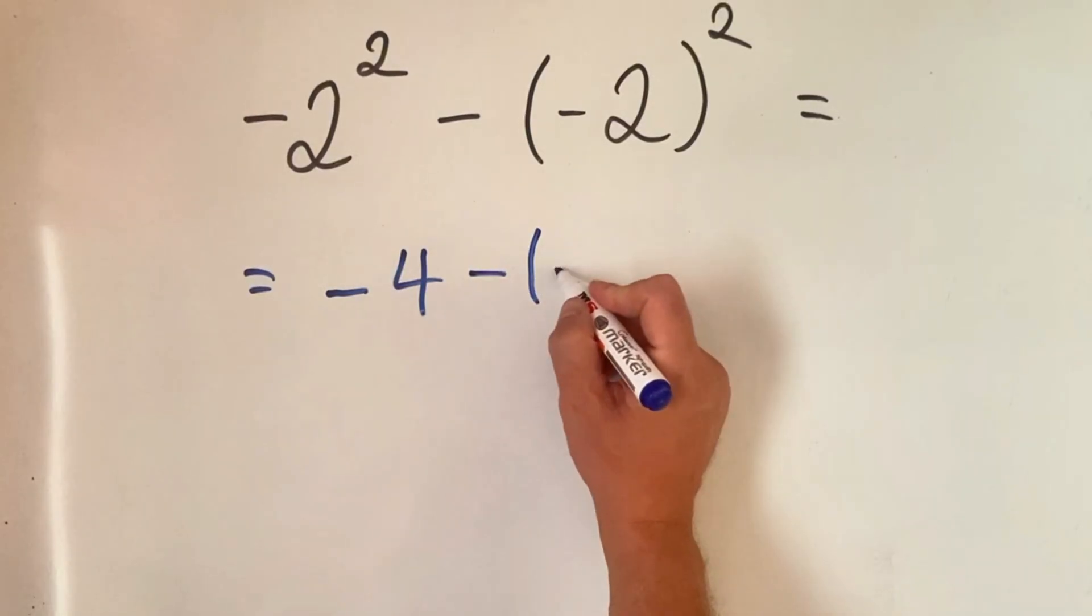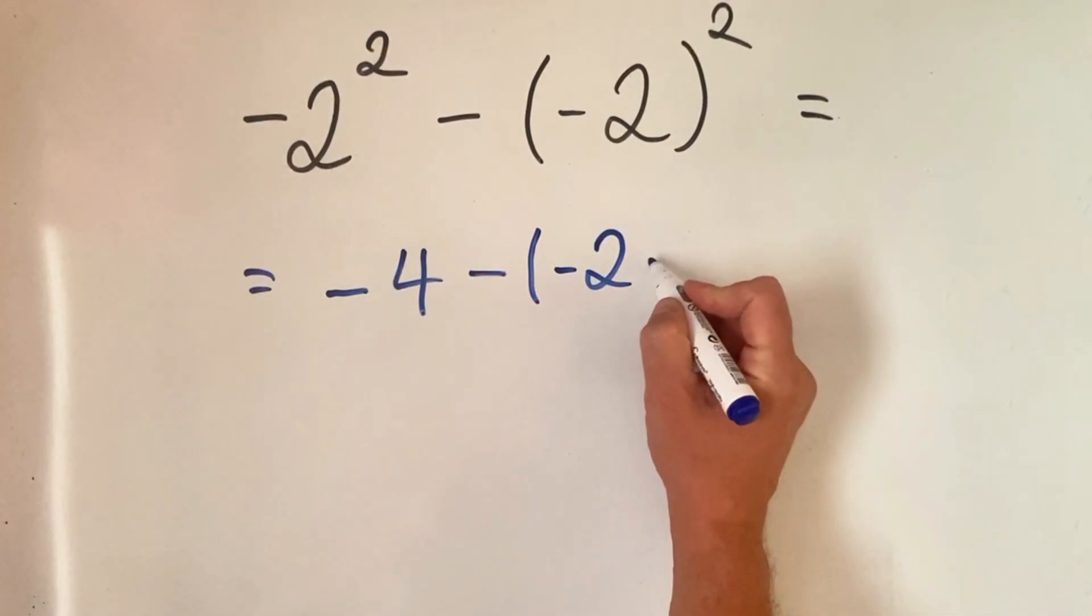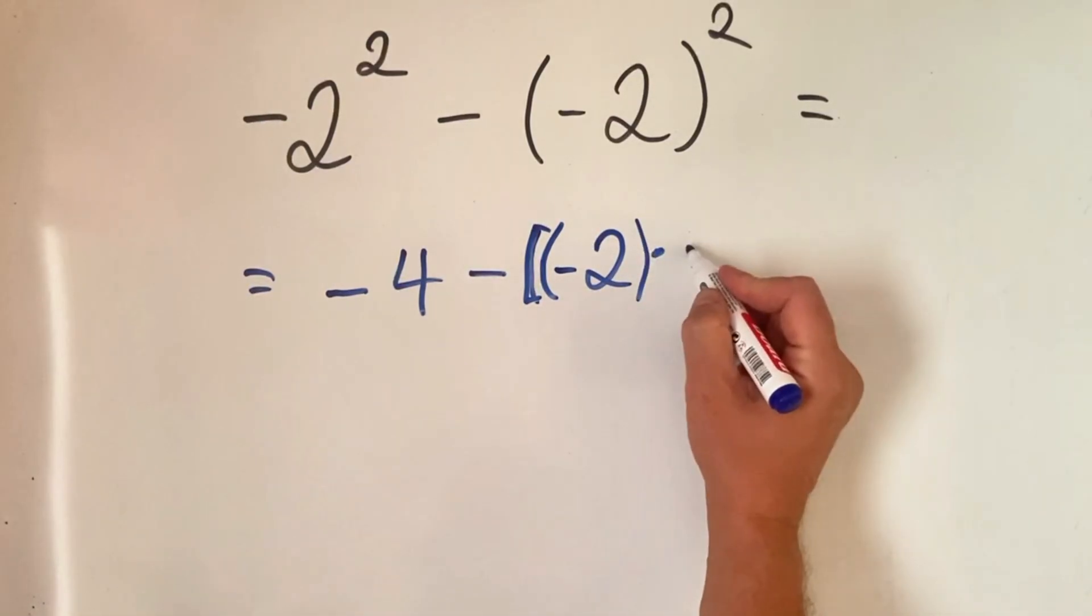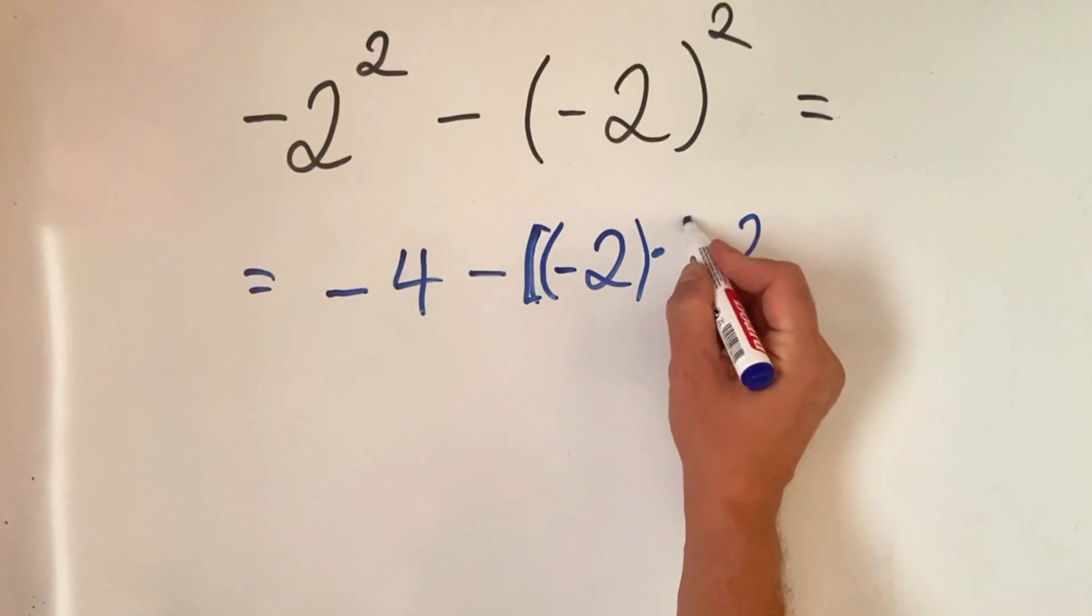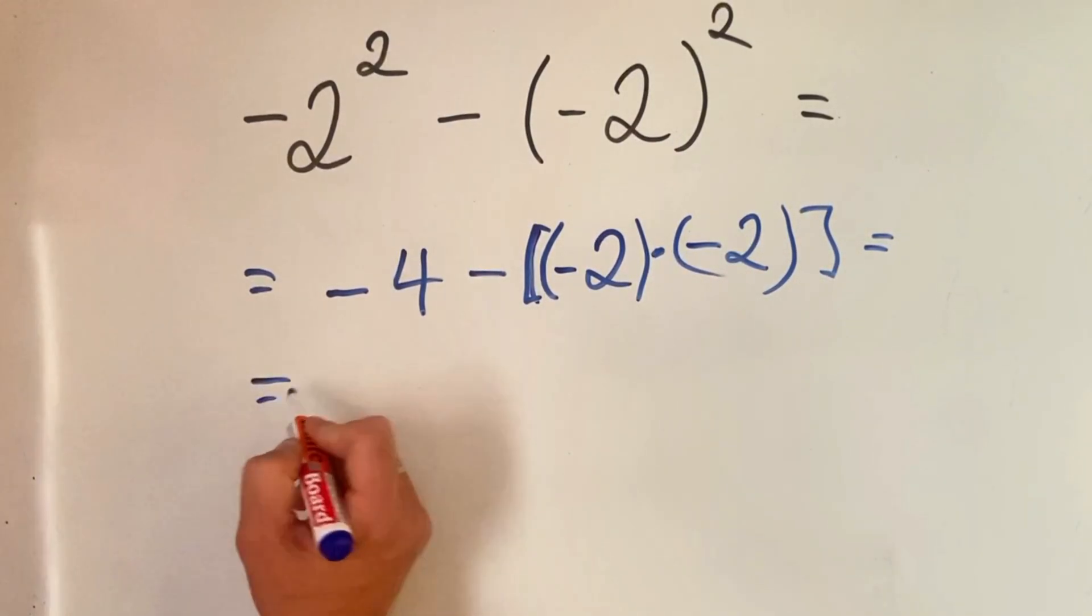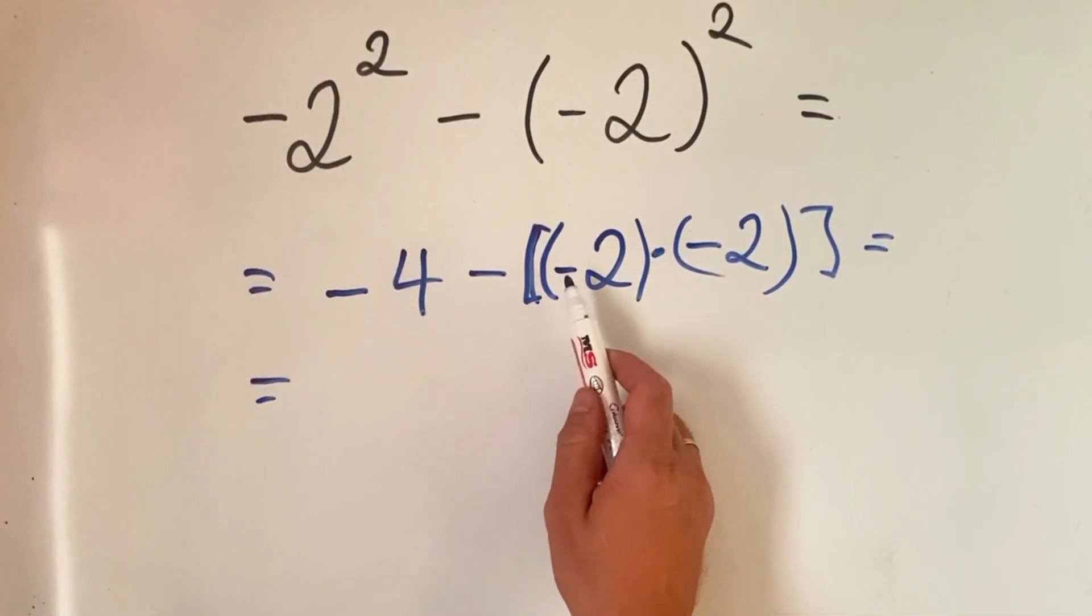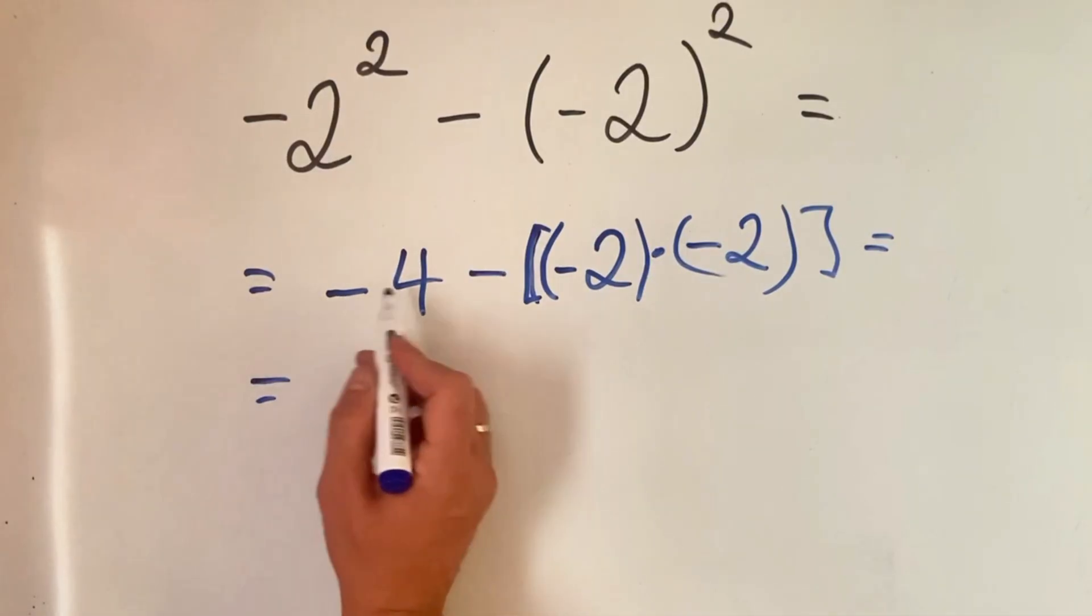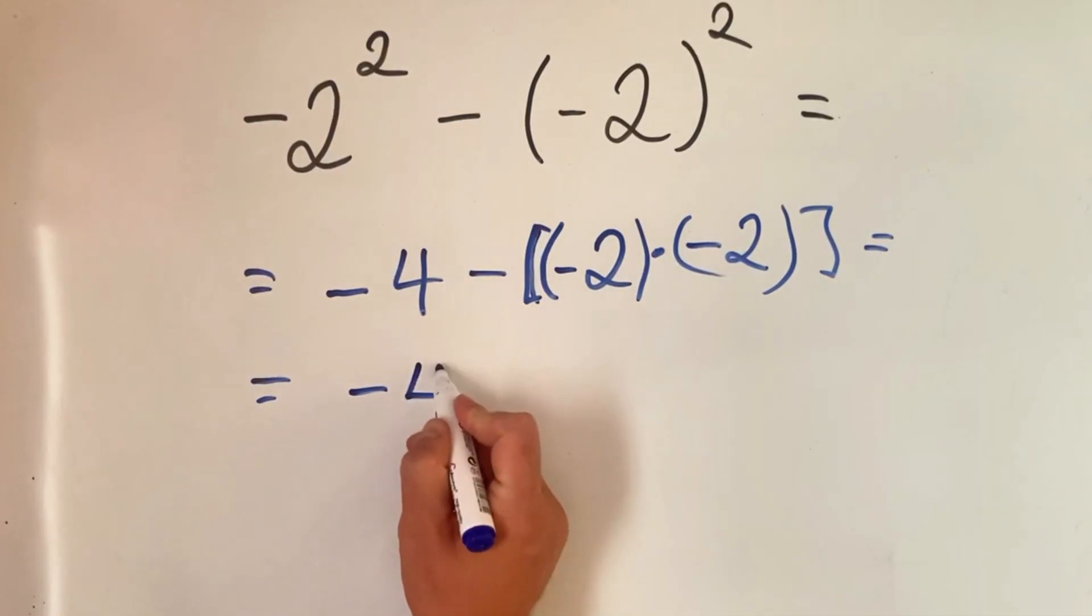So for those who still get confused about multiplying the minus sign, we all know when you're multiplying, when you're dividing, double minuses it goes into plus. So we have minus two multiplied by minus two, here we'll have four. So in the end we have minus four minus four.